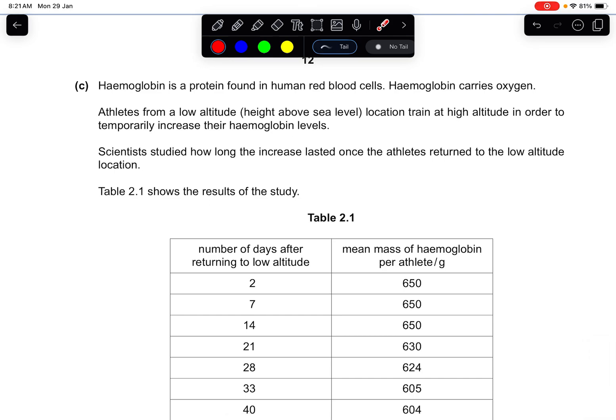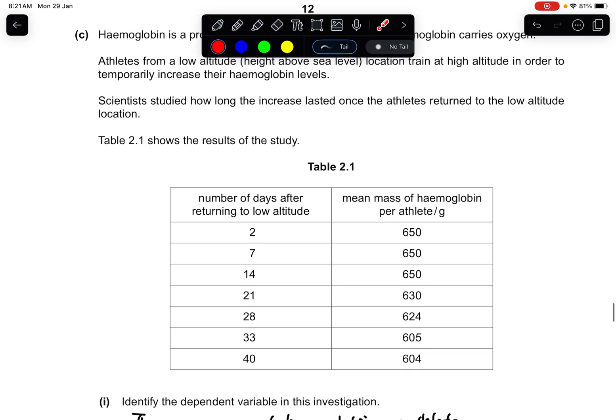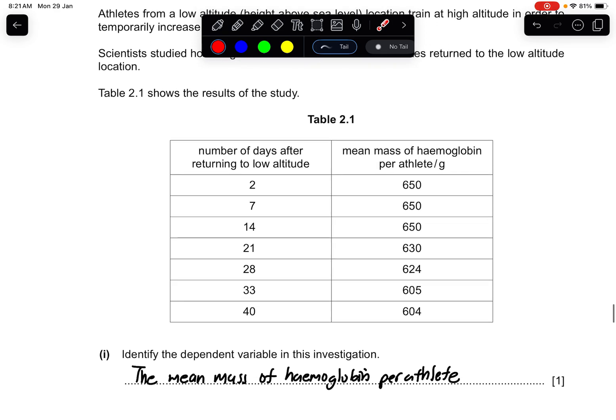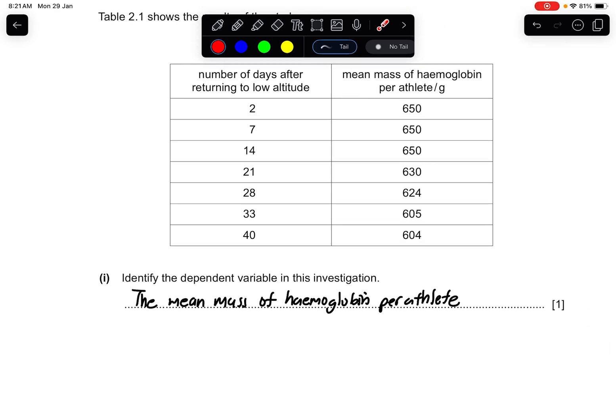Part C: Hemoglobin is a protein found in human red blood cells. Hemoglobin carries oxygen. Athletes from a low altitude location trained at high altitude in order to temporarily increase their hemoglobin levels. Scientists studied how long the increase lasted once the athletes returned to the low altitude location. Table 2.1 shows the results of the study. Identify the dependent variable of this investigation - which is actually just the y-axis.